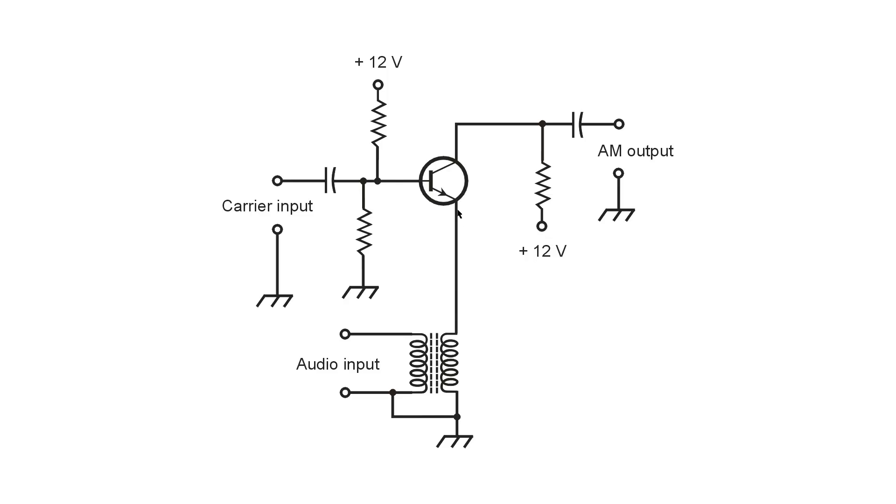So it's a variable gain, class A, radio frequency amplifier. And as long as you don't try to vary the gain too much so as to drive the transistor into the nonlinear portion of the characteristic curve, you'll get a clean AM output signal. If you drive this thing too hard, if the audio signal is too strong,